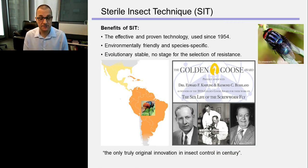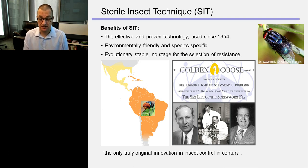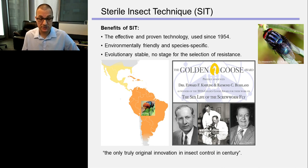The first insect for which SIT was applied was the screwworm fly. These flies used to live in the southern United States and Mexico, laying eggs in living cattle and even humans. The eggs would hatch and larvae would burrow and eat living tissue. A huge sterile insect technique program was initiated to reduce the population of screwworm flies, and it was very gradually completely eradicated from the southern states of America, Mexico, and Central American countries. Sterile males are still released in Panama to block transmission of these flies back into North America.